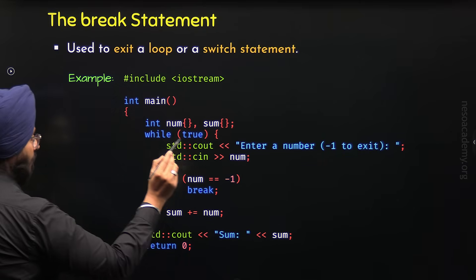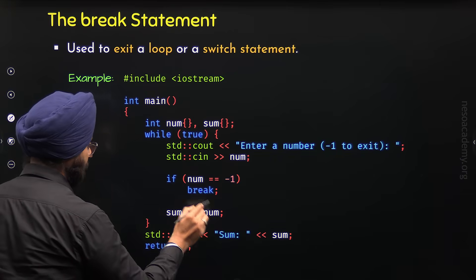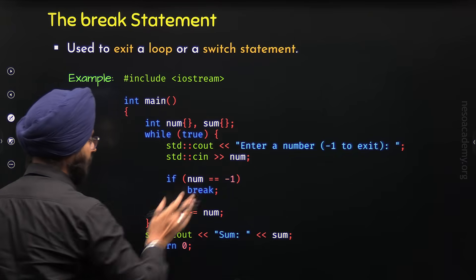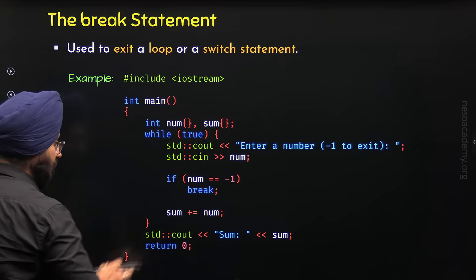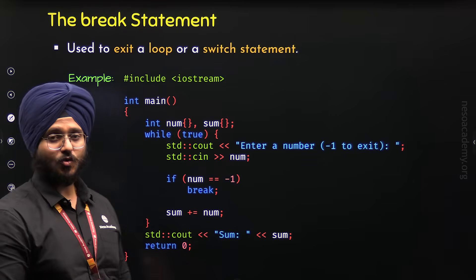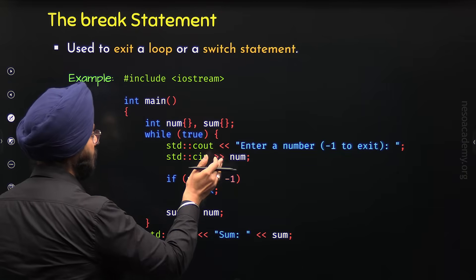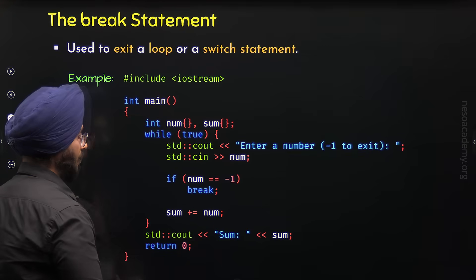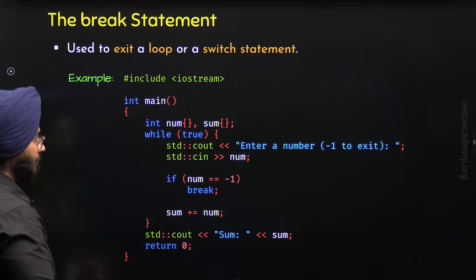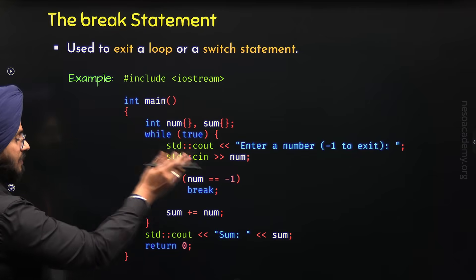If the number is not minus 1, then this statement will execute — sum equal to sum plus num. Whatever number we receive in the num variable will be added to the value of the sum variable, and the result will then be stored in the sum variable. So in this way, the sum variable will hold the sum of all the numbers entered by the user except minus 1. Because when num is minus 1, the loop will break and we will never reach this line. At this point, the statement will execute and sum will be displayed on the screen.